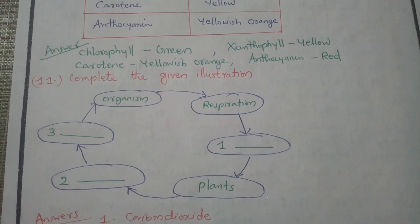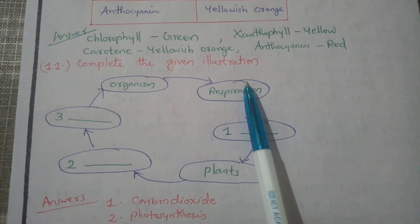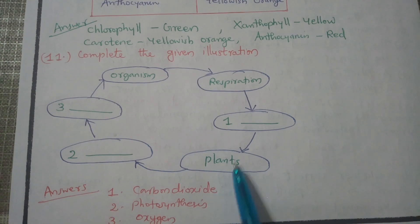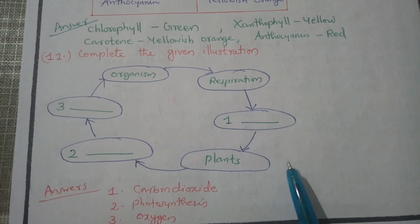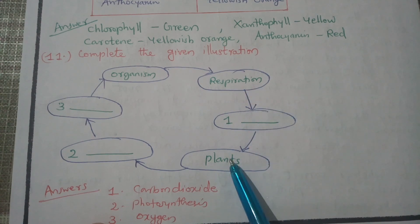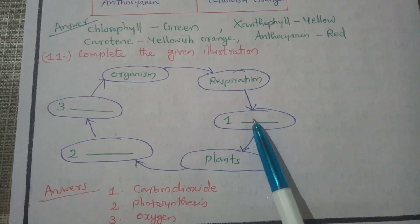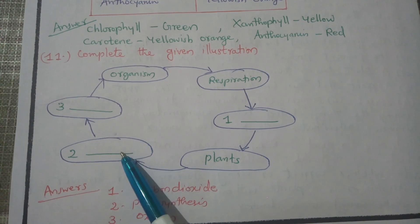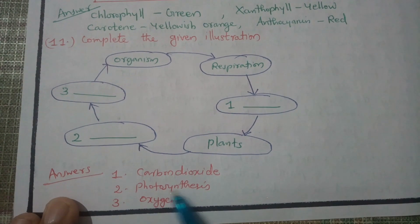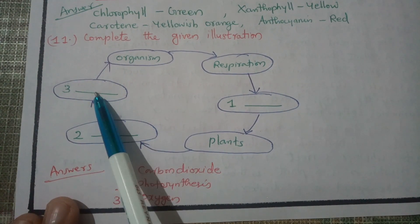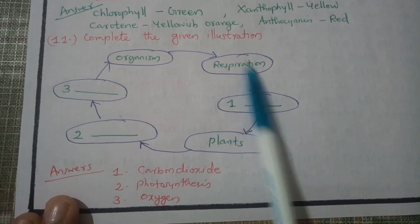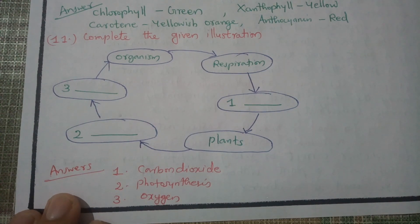Complete the given flow chart illustration. The process involves respiration and photosynthesis. During respiration, plants absorb carbon dioxide. During photosynthesis, plants produce oxygen. It is a cyclic process.